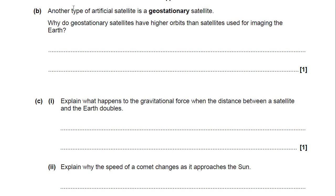Another type of satellite is a geostationary satellite. We've got the polar orbit in the previous question. A geostationary satellite is the second type of orbit. Why do geostationary satellites have higher orbits than satellites used for imaging the Earth? Think about what we talked about in that low polar orbit.